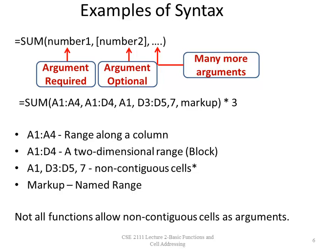Now let's look at the syntax of a basic SUM function. I have A1:A4, which sums the range A1 all the way to A4 — again, a program does that for you. A comma separates the argument; A1:D4 adds a two-dimensional range. Then I'm adding cell A1, so it's adding all the contents of A1:A4, then A1:D4, then the value of A1. Now I'm doing another range D3:D5.